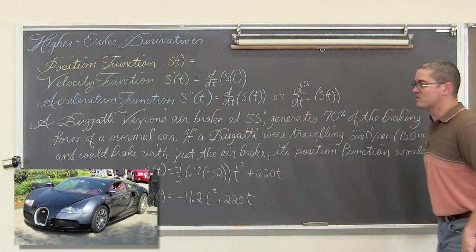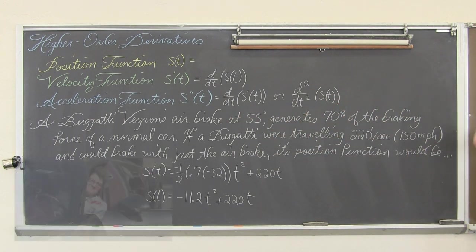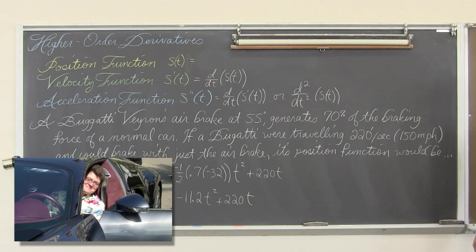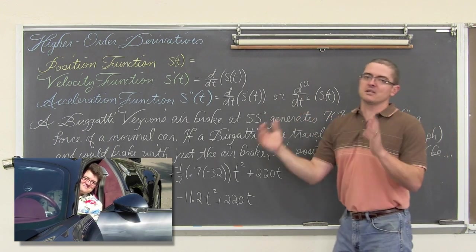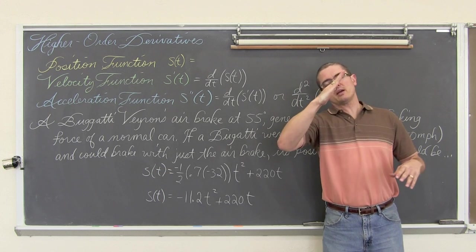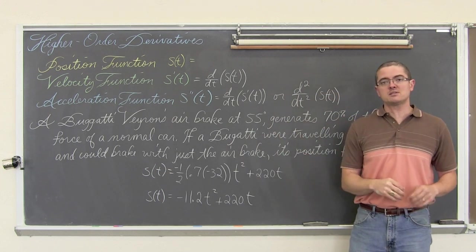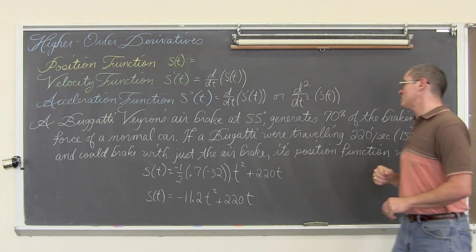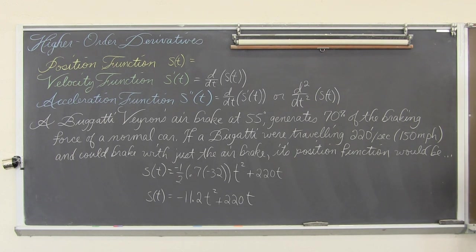But interesting fact. A Bugatti Veyron, which is some ridiculously expensive, very fast thousand horsepower car, has an air brake at the end of it. It goes so fast that you hit the brakes and it pops a wing up on the back. It holds it 55 degrees and supposedly that generates 70% of the braking force of a normal car.